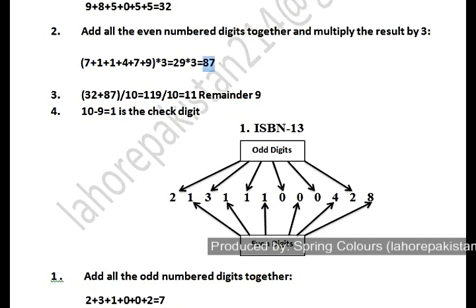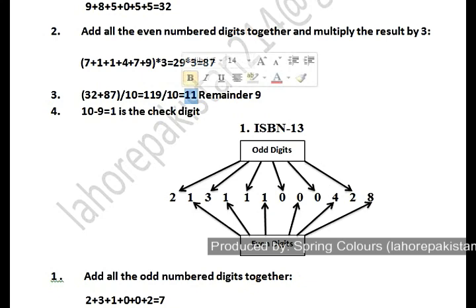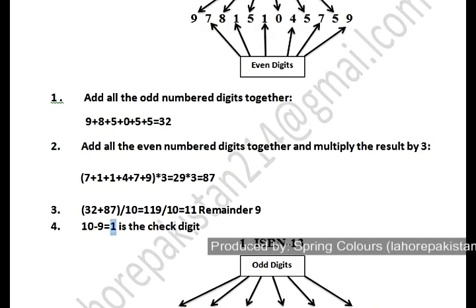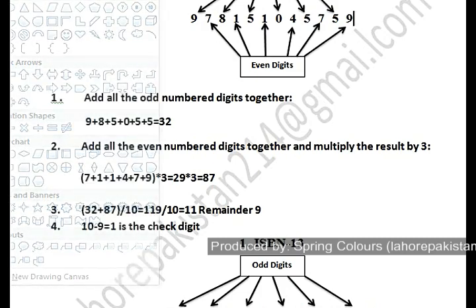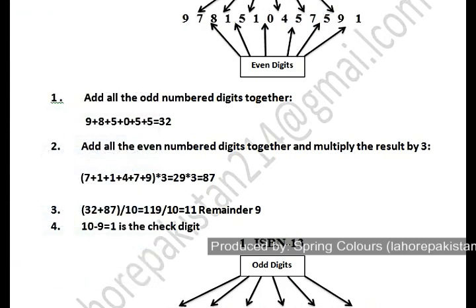In step 3, you add the answers of step 1 and step 2. The total answer was 119. I divided it by 10 — the quotient is 11 and the remainder is 9. In the ISBN-13 method, you subtract the remainder from 10, which gives us 1. So 1 is the check digit, and it is written at the end of the number.